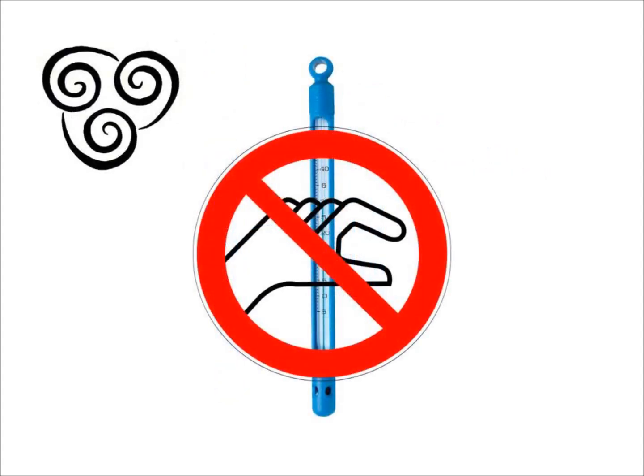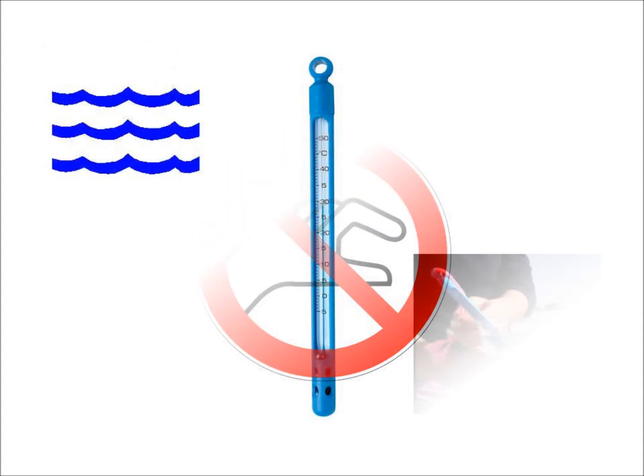When using a spirit-filled bulb thermometer for environmental monitoring, it's important that when measuring air temperature, you read the thermometer without touching it. When measuring water temperature, the thermometer must remain in the water when the measurement is read.